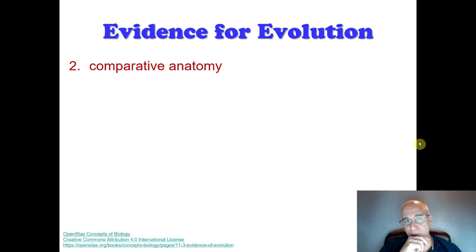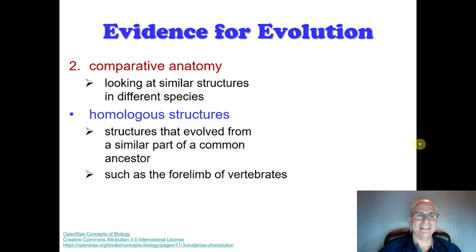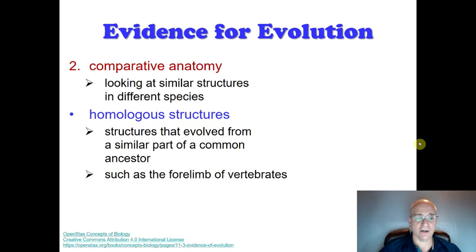The second piece of evidence is comparative anatomy. As the name implies, comparative anatomy is comparing the anatomy — looking at similar structures in different species. In particular, we're looking at what we call homologous structures. Homologous structures are structures that evolve from a common ancestor — as divergence took place and evolution led to new species, those species would have either the same or derivations of those characteristics.